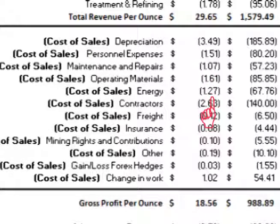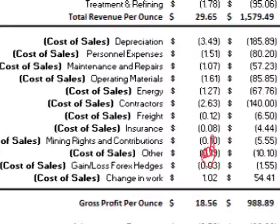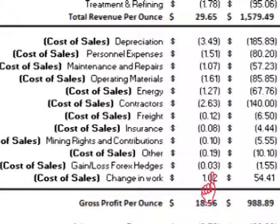Energy costs were $1.27 per ounce; contractor costs were $2.63 per ounce; freight costs were $0.12 per ounce; insurance costs were $0.08 per ounce; mining rights and contribution costs were $0.10 per ounce; other miscellaneous costs were $0.19 per ounce. There was also a $0.03 per ounce loss in foreign exchange hedges and a credit of $1.02 per ounce from changes in work, for a total cost of sales of $11.09 per ounce.